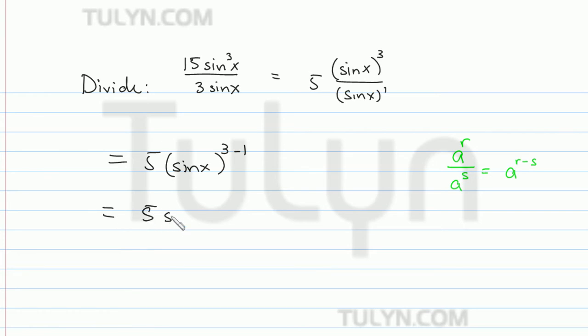So then simplifying, this is 5 times sine of x squared, which can be written as 5 sine squared of x, since they're equivalent expressions.